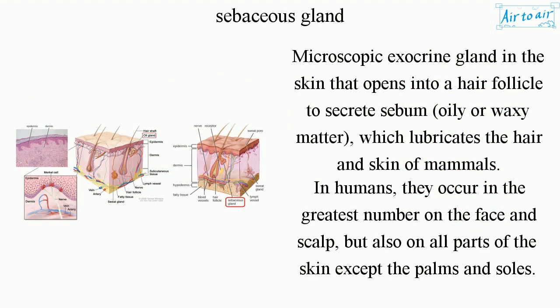In humans, sebaceous glands occur in the greatest number on the face and scalp, but also on all parts of the skin except the palms and soles.